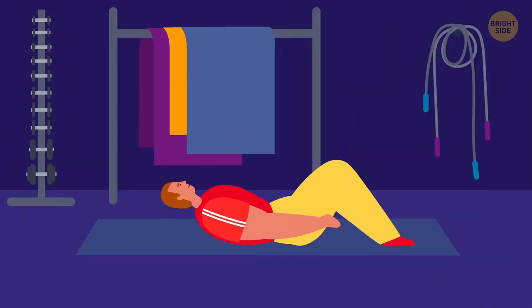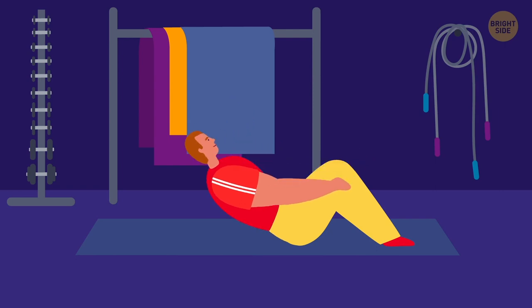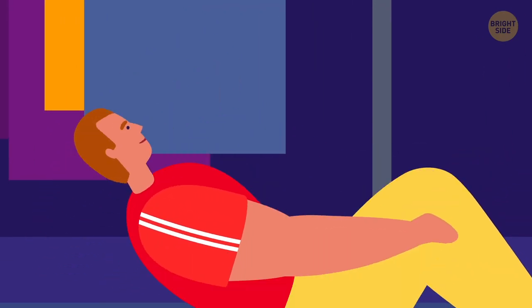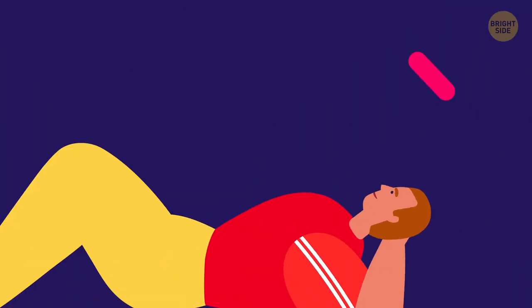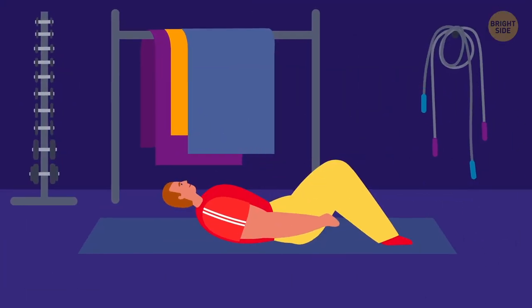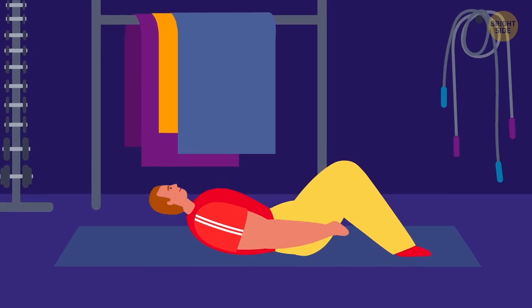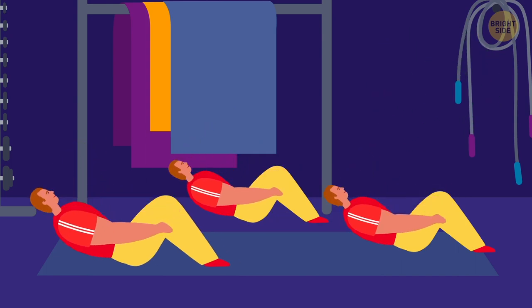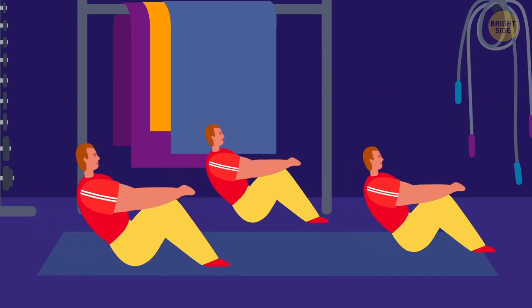Now at first sight, sit-ups seem like a simple exercise. But doing them incorrectly can lead to serious problems with your back and neck. Never push your head forward with too much strength, especially with your hands. Try not to round your lower back. Do your best to go slowly, otherwise you're likely just to rock back and forth. If you make these mistakes once, they won't do much harm. But repeating them regularly will cause permanent damage.